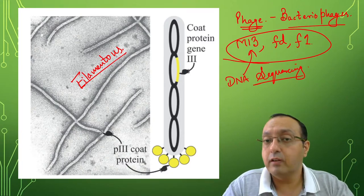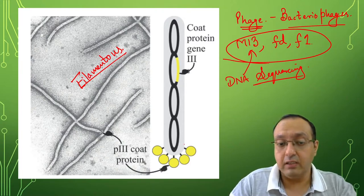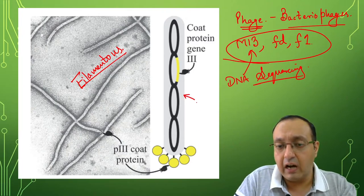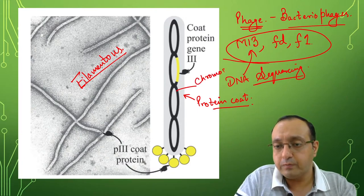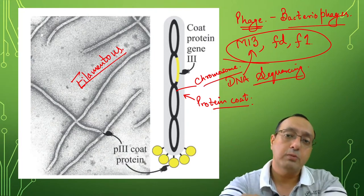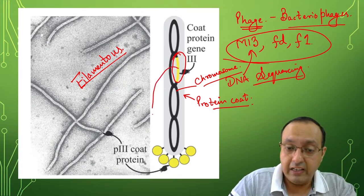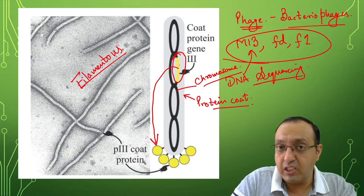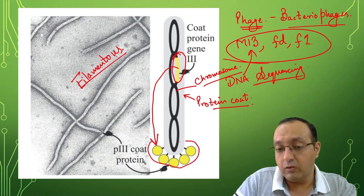In the case of phage display, what George Smith developed was a way to make sure that one of the proteins produced by this phage was a foreign gene product. This is the structure of the phage — in the gray you can see the outer protein coat, and in the black you can see its chromosome. What George Smith did was he replaced one of the fragments of the coat protein, especially gene three, which led to production of this coat protein on the outside, and replaced it with a foreign piece of gene. What happened was the gene he introduced was expressed on the outside of the phage.